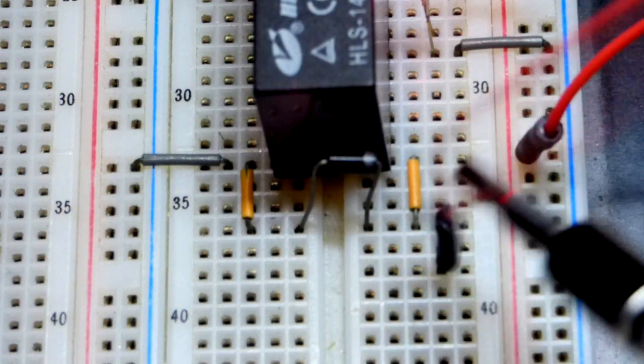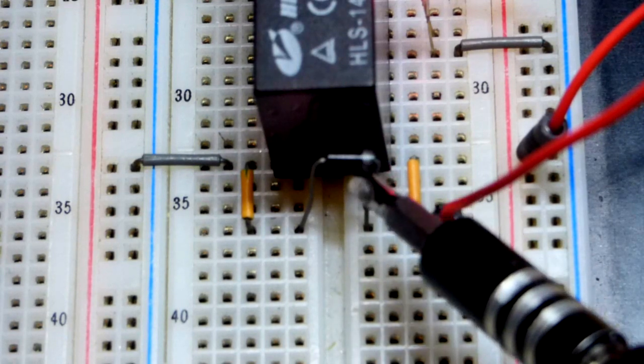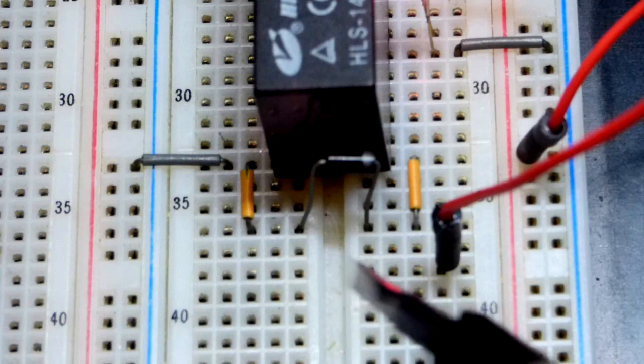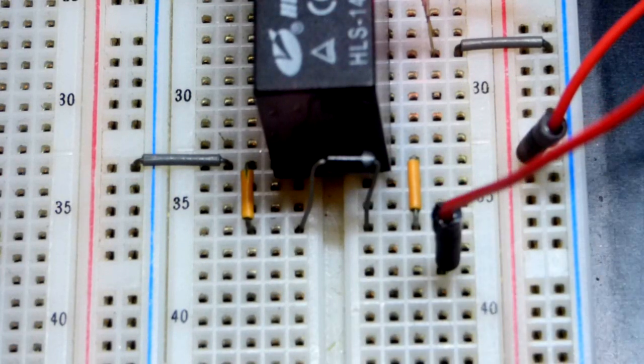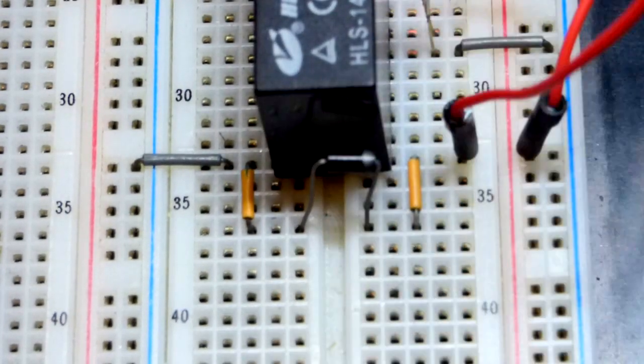Of course you can also power it from the other side. Make sure you have the rectifier diode the right direction though. Cathode has to be towards the positive side of the power supply, anode towards the negative. Cathode, the gray band. Otherwise it works the same right there. We'll see, we'll apply 12 volts to the coil.